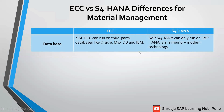First one: database. In ECC, SAP ECC can run on third-party databases like Oracle, MaxDB, and IBM. Whereas in S4HANA, it can only run on SAP HANA, an in-memory modern technology.